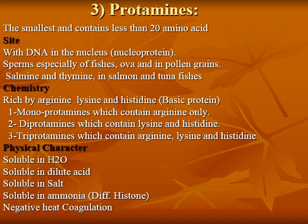Protamines are classified into three types: monoprotamines, which contain only arginine; diprotamines, which contain lysine and histidine; and triprotamines, which contain arginine, lysine, and histidine. The characteristics of protamines: soluble in water, diluted acid, salt, and ammonia; negative for heat coagulation.